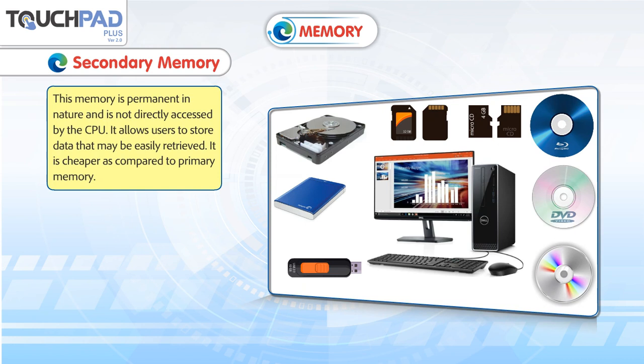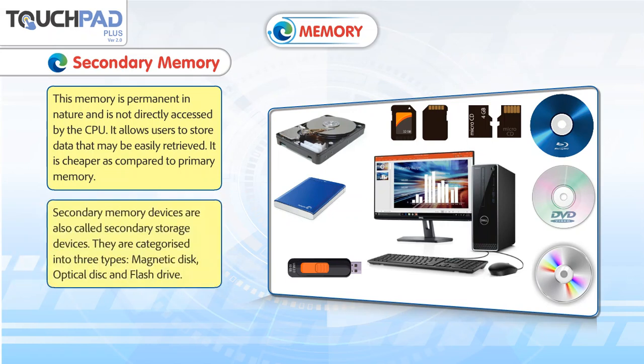Read Only Memory is not directly accessed by the CPU. It allows users to store data that may be easily retrieved. It is cheaper as compared to primary memory. Secondary memory devices are also called secondary storage devices, and they are categorized into three types.